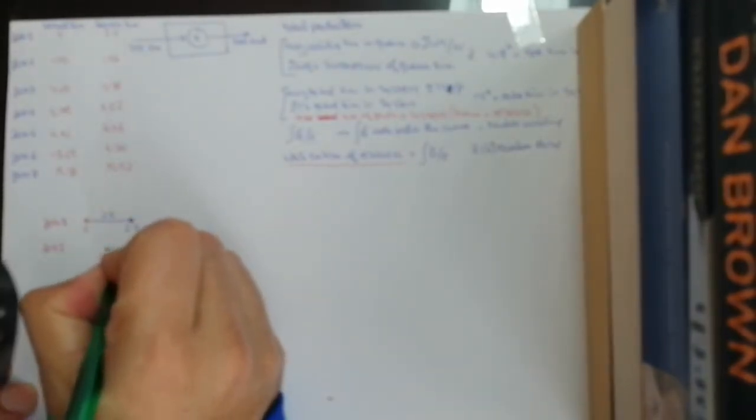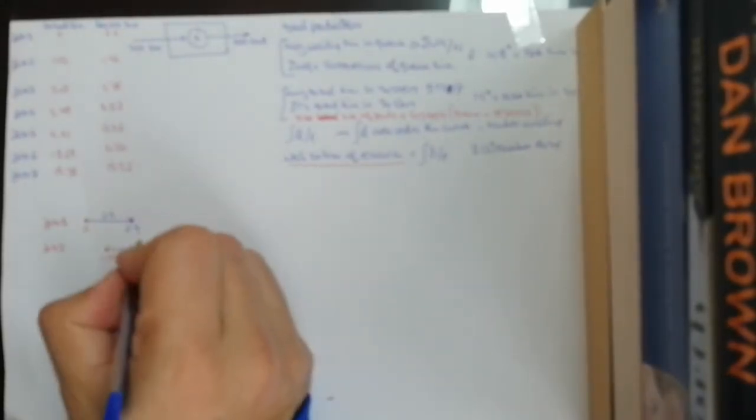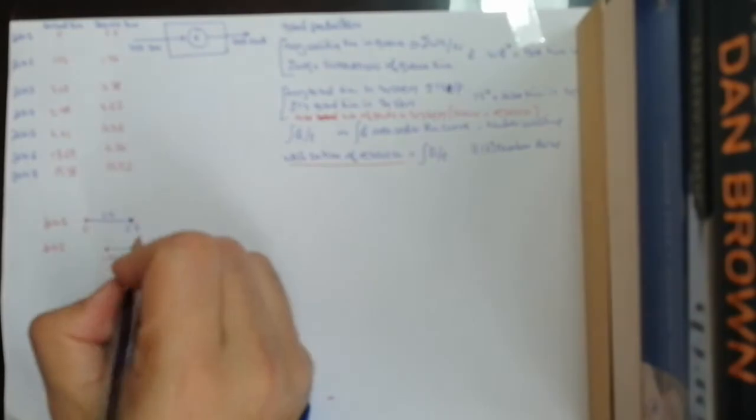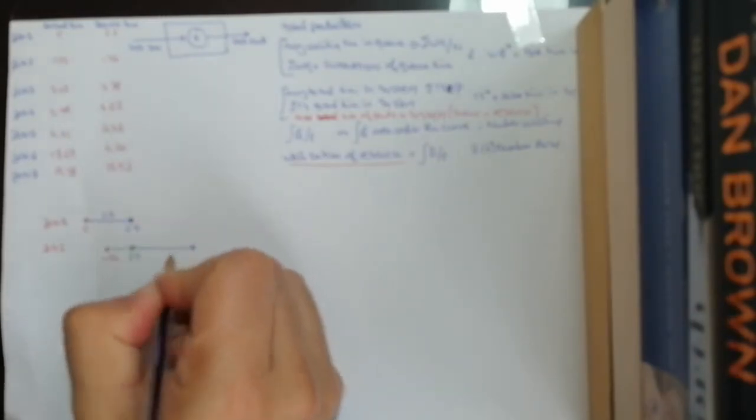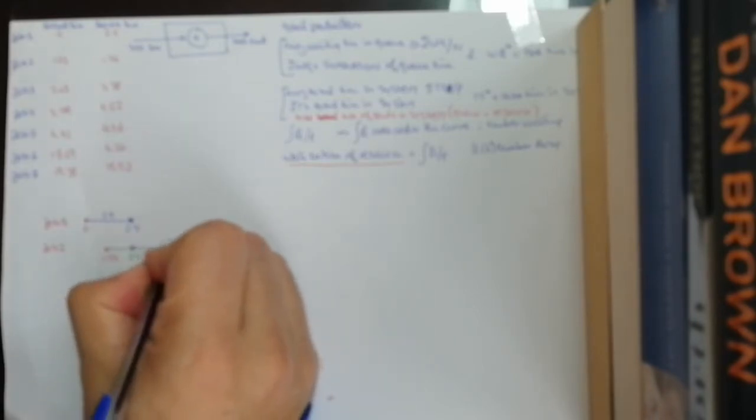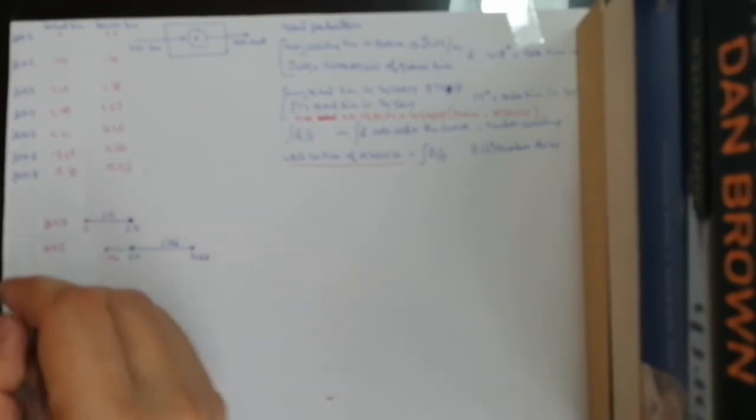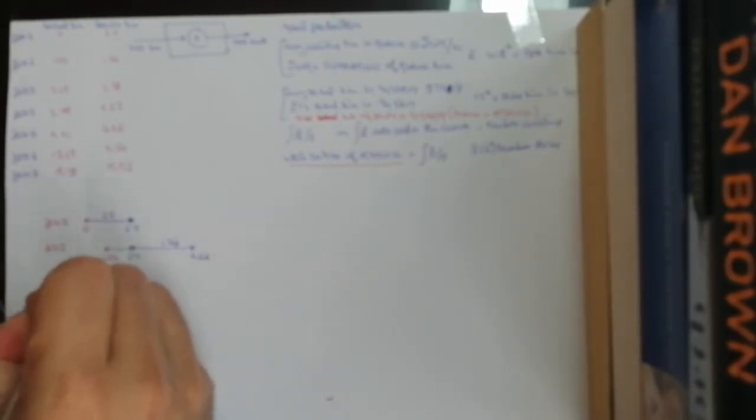Job 2 arrives at 1.73. It waits in the system until 2.9, then starts being serviced for 1.76, leaving at 2.9 + 1.76 = 4.66.